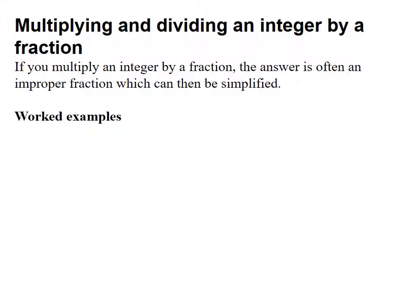Let's have a look at some examples. Something like this: 3 times 3 quarters. We're going to do 3 times 3 quarters. You can think of the 3 as 3 over 1—3 divided by 1 is 3 after all.